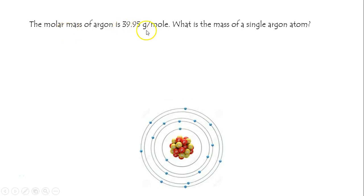The molar mass of argon is 39.95 grams per mole. What's the mass of a single argon atom?